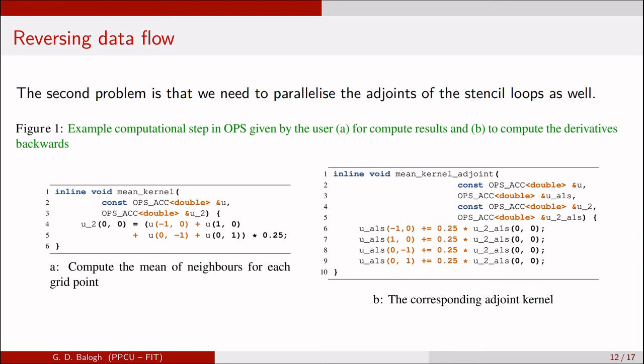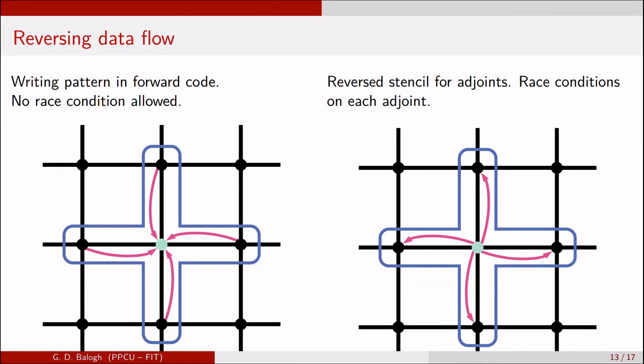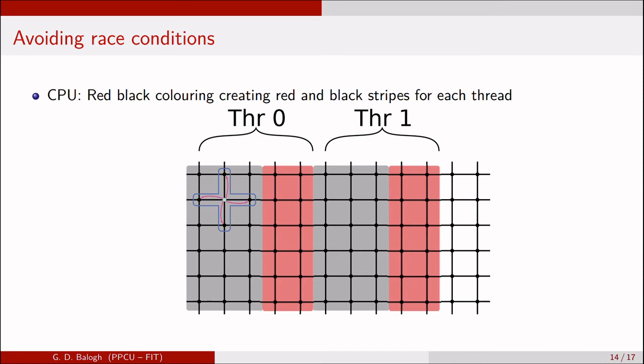Basically we will end up with scatter operations. We read the derivative on the current iteration with 0,0 offset, and we write the derivative of other datasets with non-zero offsets. The gather operations from the primal code will be changed to scatter operations. To avoid race conditions arising from the scatter operations, we introduced a two-color striping.